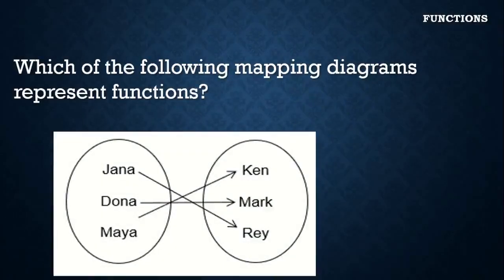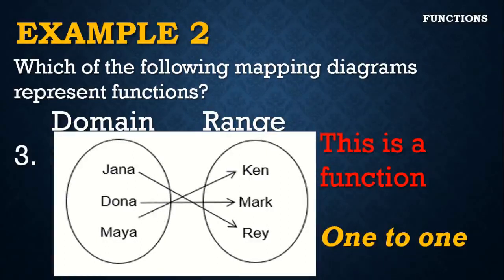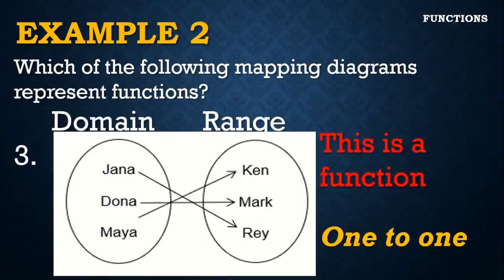Another real-life example: Jana is related to Ray, Maya is related to Ken, and Donna is related to Mark. We have a one-to-one relationship here, so this is a function. You now know how to determine if a given set of ordered pairs or a mapping diagram represents a function — whether the correspondence is one-to-one, one-to-many, or many-to-one.